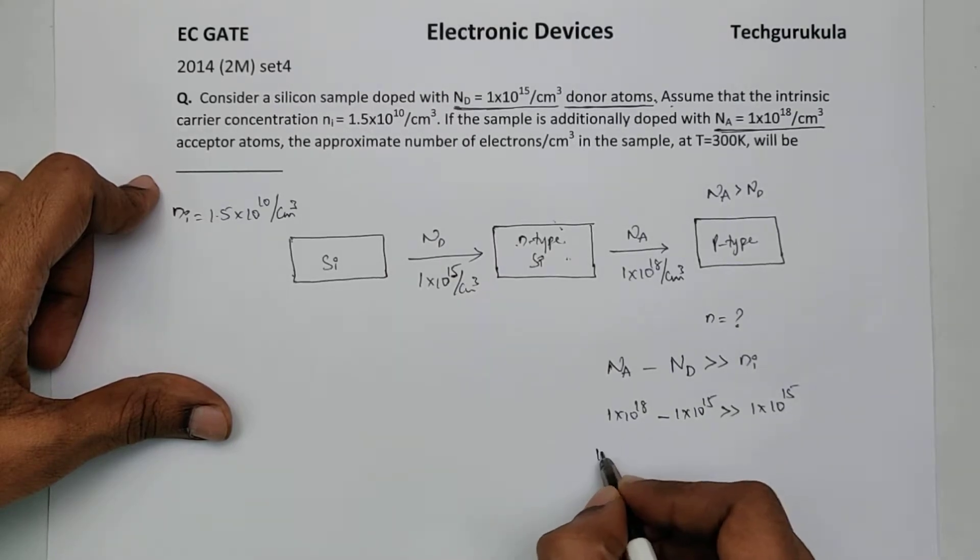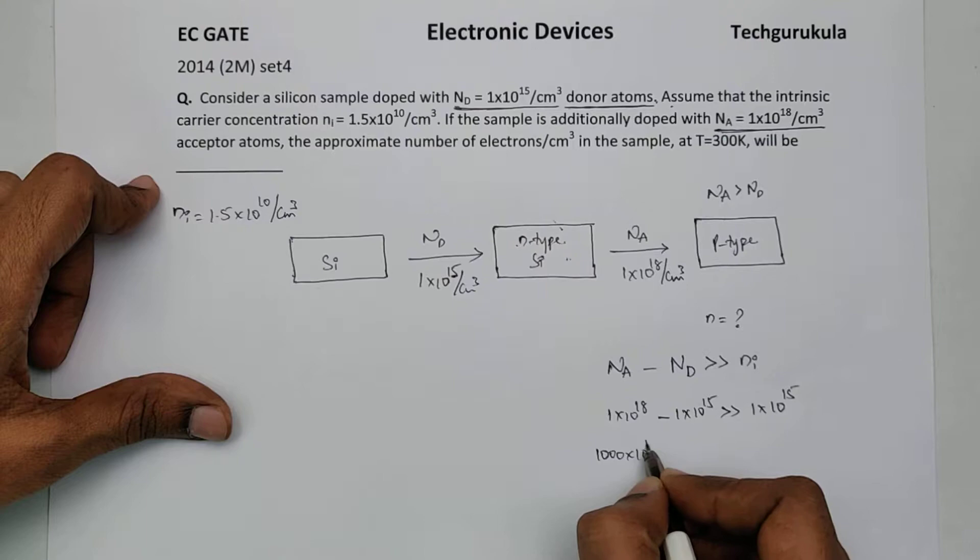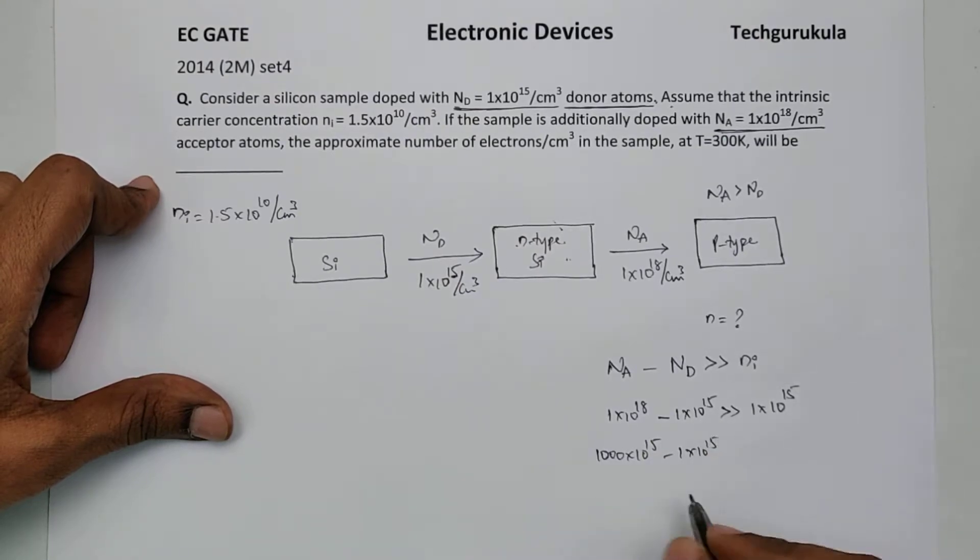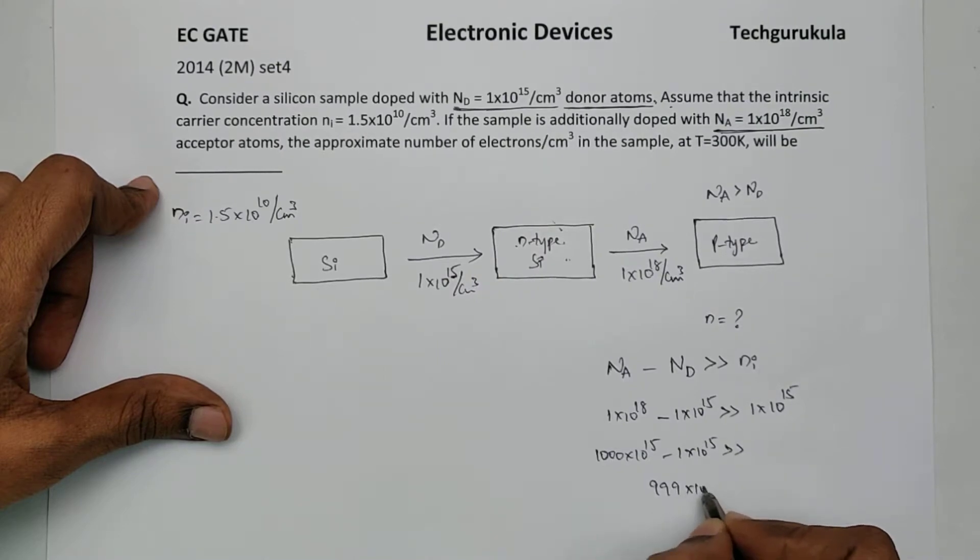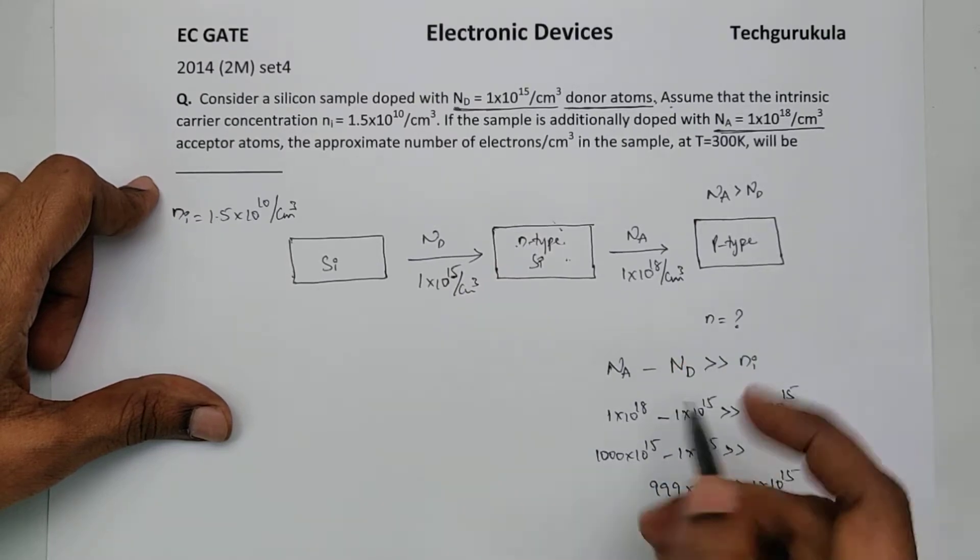I can write this as thousand times 10 power 15 minus 1 times 10 power 15. Obviously this will be 999 times 10 power 15, which is very much greater than 1.5 times 10 power 10. So I can say this condition is satisfied.